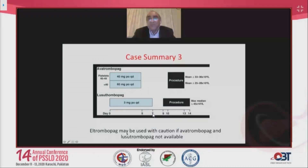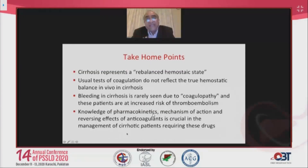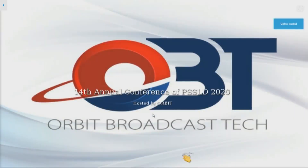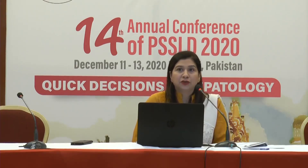Take-home points: cirrhosis represents a rebalanced hemostatic state; usual coagulation tests do not reflect the true in vivo hemostatic balance; bleeding in cirrhosis is rarely caused by coagulopathy; these patients are at increased risk of thromboembolism as well. Knowledge of pharmacokinetics, mechanism of action, and reversing effects of anticoagulants is crucial in managing cirrhotic patients requiring these drugs. The moderator thanks Professor Alam and notes that treating cirrhosis with coagulation disorders is like a double-edged sword.